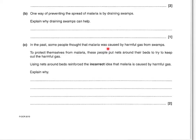In the past, some people thought that malaria was caused by harmful gas from swamps. To protect themselves, people put nets around their beds to try to keep out harmful gas. Using nets around beds reinforced the incorrect idea that malaria is caused by harmful gas. For the first mark, you've got to say they thought the nets were successful in stopping the gas, or that the gas can get through the nets, or they did not know mosquitoes caused malaria. The second mark: the nets stopped the mosquitoes from getting through. If you put that the reduction in malaria was put down to stopping the gas, but it was in fact stopping the mosquito, that would get you both marks.